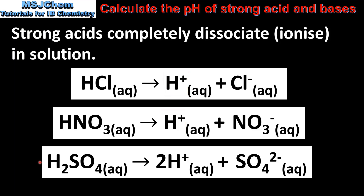Sulfuric acid is a diprotic acid. A diprotic acid is able to donate two protons. This means that when one mole of sulfuric acid dissociates, we get two moles of hydrogen ions.